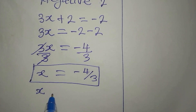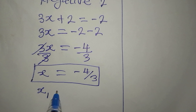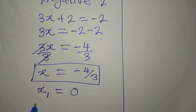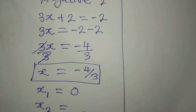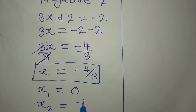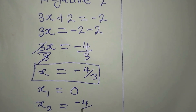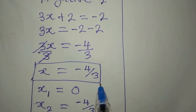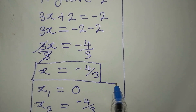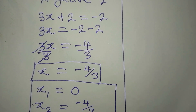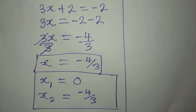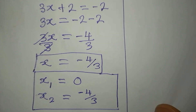Bringing the two solutions together: x₁ = 0 and x₂ = negative 4 over 3. These are the two real solutions from this branch.